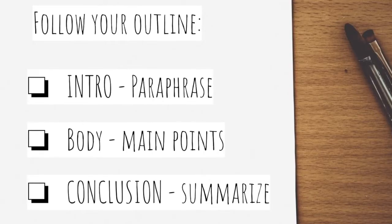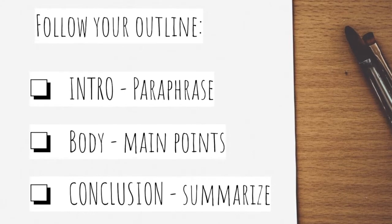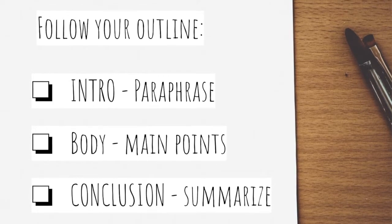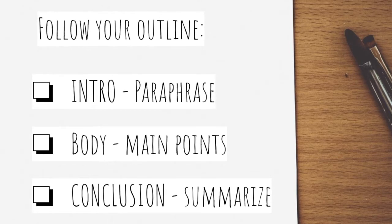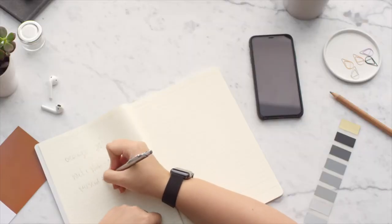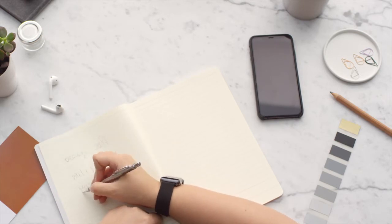I've listed a basic outline structure: the introduction in which you paraphrase the question, the body in which you focus on your main points, and the final paragraph which is your conclusion — your summary. The last paragraph should not include any new ideas. If you have a new idea in that final paragraph, it means you didn't write the outline or think through what you needed to say.